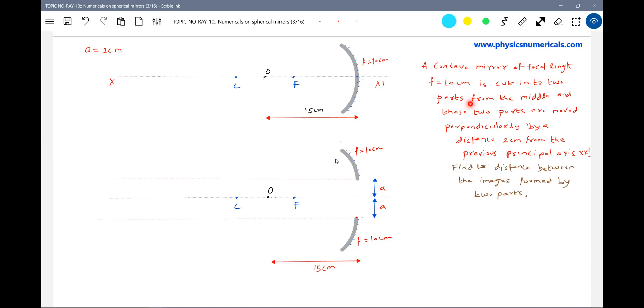Now this mirror I'm going to cut into two equal parts from the middle, and these two parts are moved perpendicular by a distance of 2 cm from the previous principal axis. Now what will be the position of the images formed by the mirror? Find the distance between images formed by the two parts, upper part and lower part.